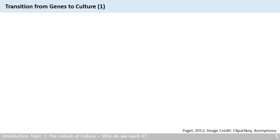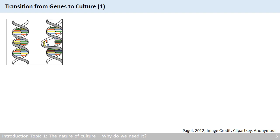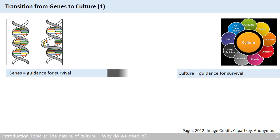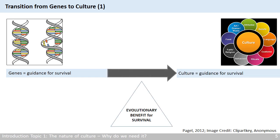So the main difference that sets us apart from animals is that animals rely on their DNA to survive, while humans rely on culture to survive. Evolution has clearly done something here — by reducing the role of DNA for humans and making culture the main guidance for survival. But why is that?